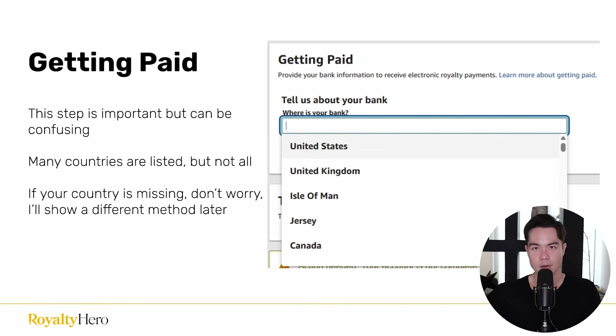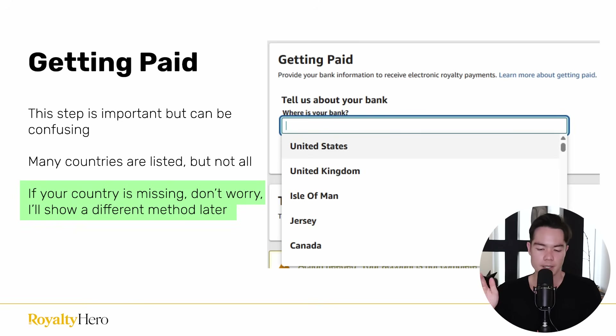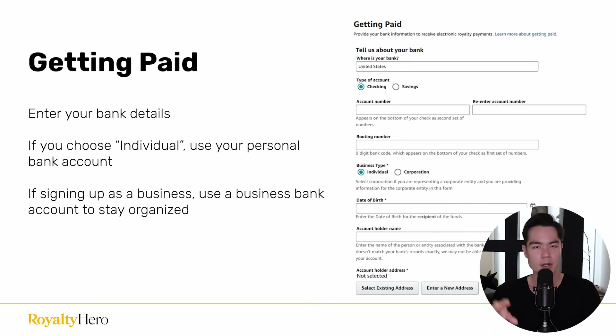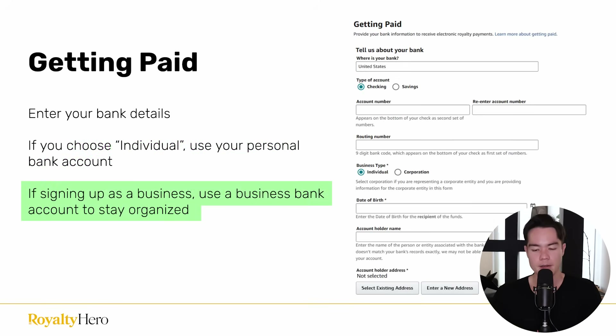Once you fill out that section, the next part is how you're going to get paid. If your country is listed, simply click it and enter your bank account information — checking or savings, account number, routing number, business type, date of birth, and account holder name. If the bank account is under your name, put that; if it's under a company, put that. For accounting purposes, if you're signing up as a business you should use a business bank account — using your personal bank account while operating as a business is called commingling your funds, which is not good for accounting. Keep everything aligned: individual uses personal bank account, company uses company bank account.